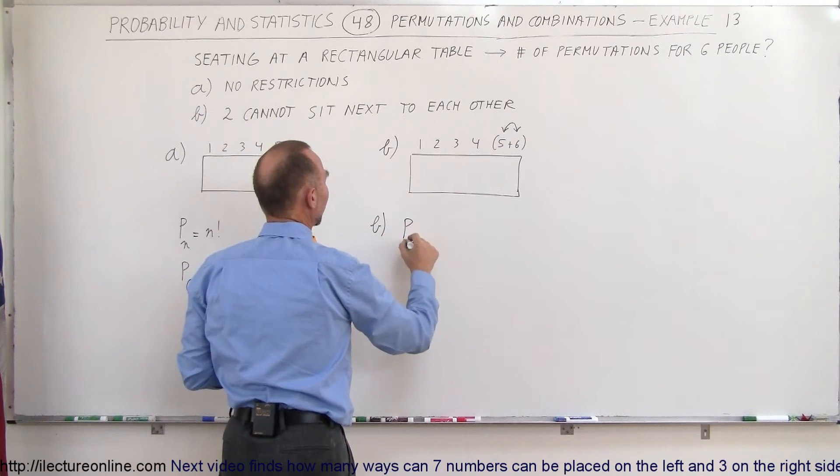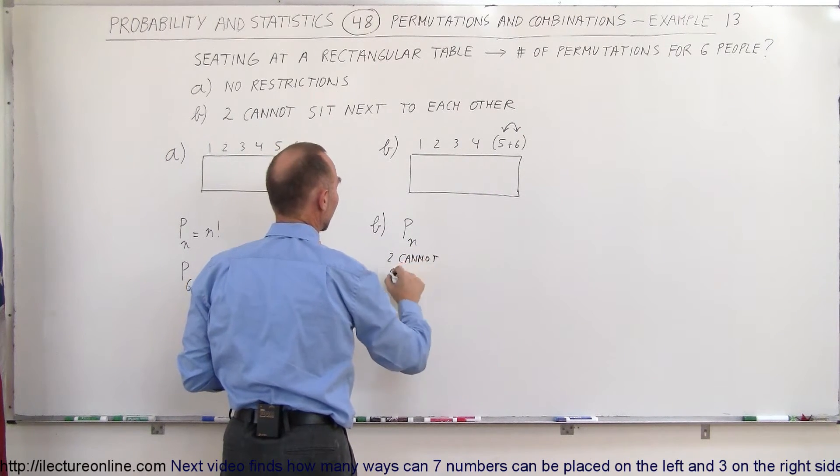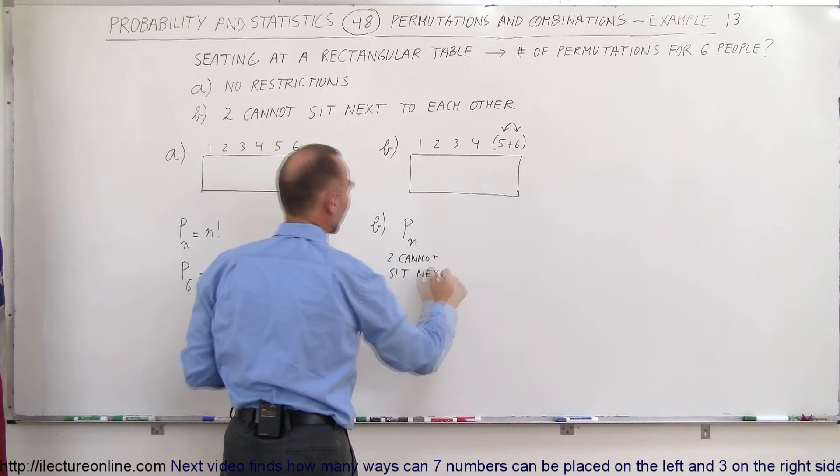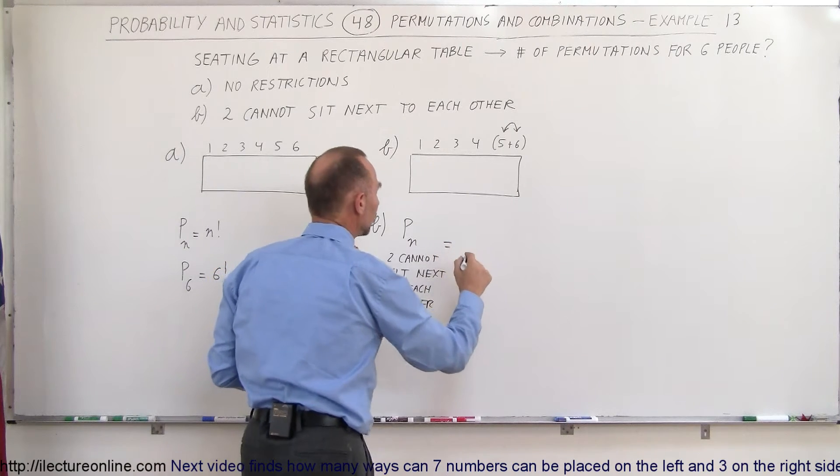To find that for Part B, the number of permutations for n people with two cannot sit next to each other, where two cannot sit next to each other, that would be equal to...